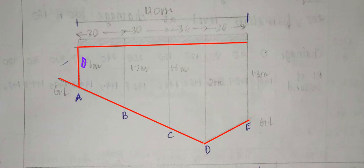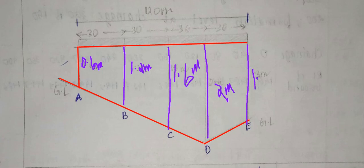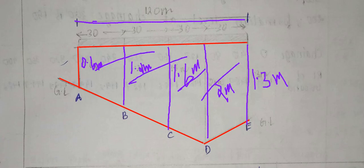At the first 30-meter interval, the height difference is 0.6 meters. At the next 30-meter interval, the height is 1.2 meters. Then 1.6 meters at the third interval, 2.0 meters at the fourth, and 1.3 meters at the last interval. The total embankment length is 120 meters, and we calculate the quantity of earthwork to be filled over this length.